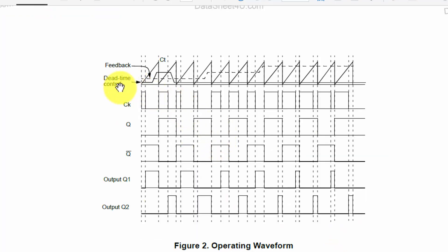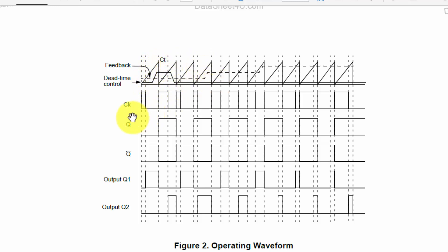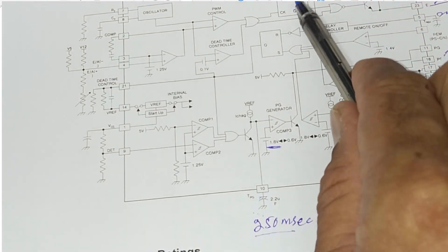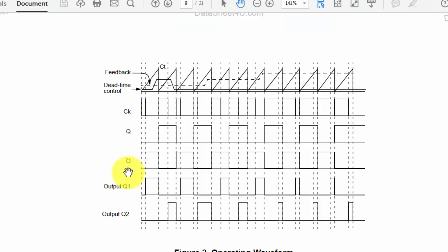The timing sequence shows the dead time control, the RT and CT ramps representing the oscillation frequency, the clock signal Q and Q-bar from the flip-flop circuit, and the resulting output switching waveforms.